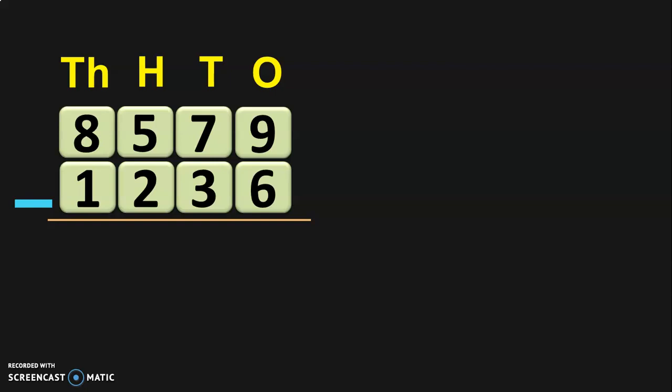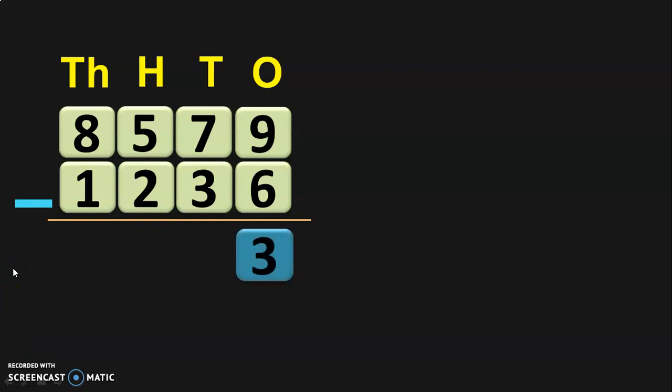In the ones place, we have 9 minus 6. In backward subtraction, you will keep 9 in the mind and 6 in the fingers, and count numbers in the backward direction: before 9 — 8, 7, 6, 5, 4, 3. So the answer is 3. In forward subtraction, you count after 6: 7, 8, 9 — and the answer is also 3. In this video, I will be using the backward subtraction concept.